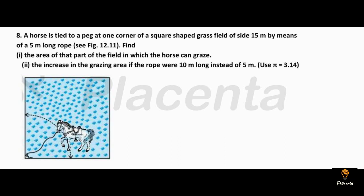The question we have is: a horse is tied to a peg at one corner of a square-shaped grass field of side 15 meters, by means of a 5-meter long rope. The horse is tied up and bound, the rope is 5 meters. Since the field is square, it has 4 equal sides, each 15 meters. We need to find the area of that part of the field in which the horse can graze.